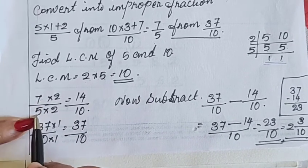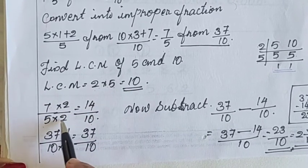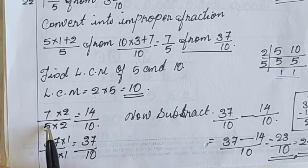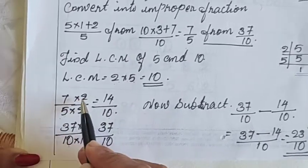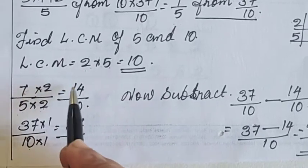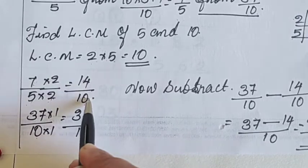Now 7 by 5. For getting 10 means this LCM is 10. For getting time which number we have to take? 5 multiplied 2 is equal to 10. The same number upside. With numerator also we have to multiply. 7 times 2 is 14. Now instead of 7 by 5 we have 14 upon 10.